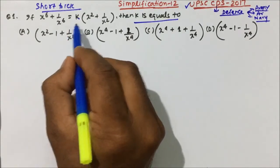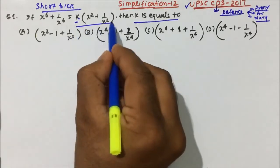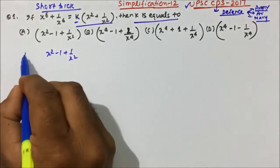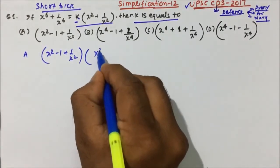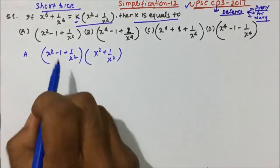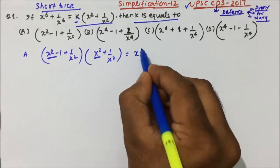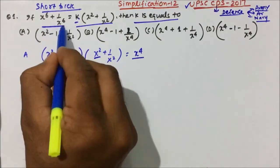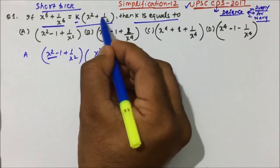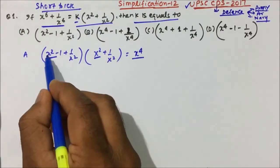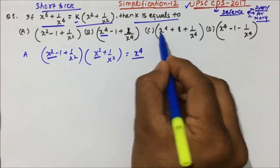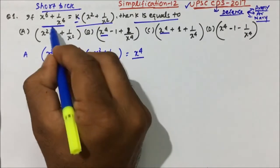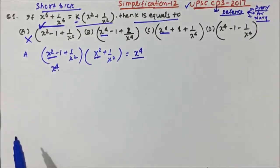We will go by option elimination method. If you keep option A — x squared minus 1 plus x squared — and multiply x squared by x squared, the maximum power you will get is x to the power 4. But in the question, x to the power 6 is required. You need x to the power 4 to multiply with x squared to give x to the power 6. So option A is eliminated.